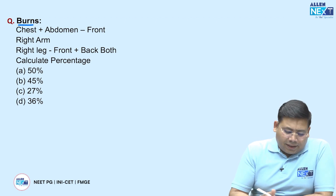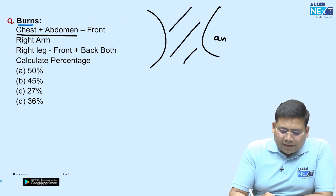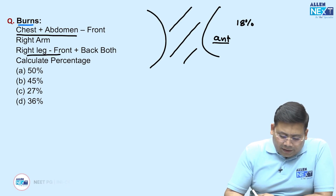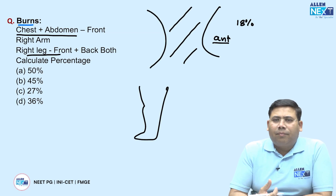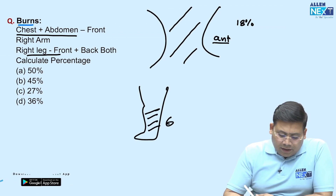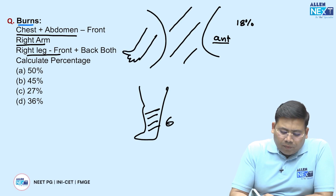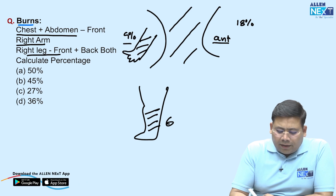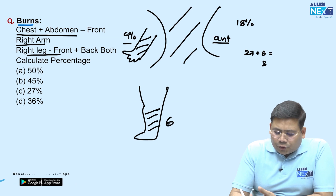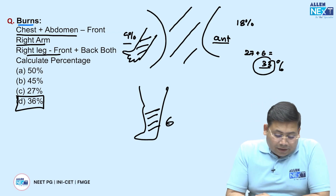A question on burns involving the chest and abdomen. The anterior chest and abdomen contributes 18%. The right leg — a circumscribed burn over the thigh, front and back — contributes about 6. The right arm contributes 9. So 18 plus 9 is 27, plus 6 is 33%. The best probable answer would be D, which is 36%.